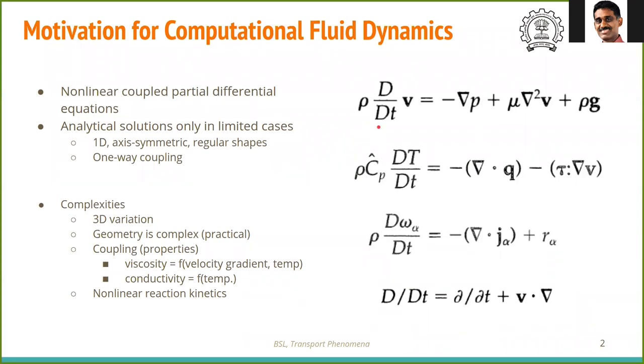We know from transport phenomena modeling that the equation of change for the conserved quantities of momentum, energy and species is given by this set of equations. The first is the Navier-Stokes equation for momentum balance. The second is the energy conservation equation for an ideal gas. And the third is the reaction diffusion equation for a species.